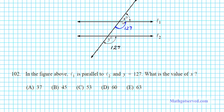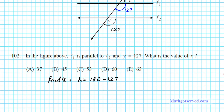Now these two angles are supplements of each other — they add up to 180 degrees. So to find x, we take 180 minus 127, since they form a linear pair. 180 minus 127 gives us 53 degrees. We can clearly see that option C is our answer.